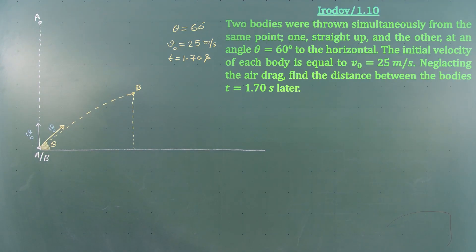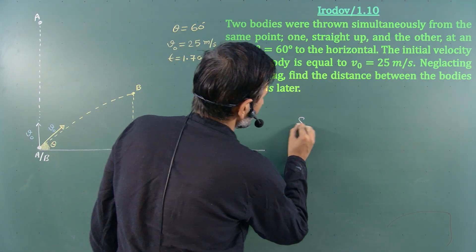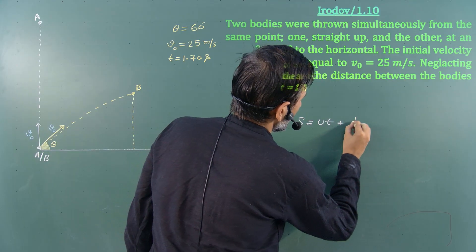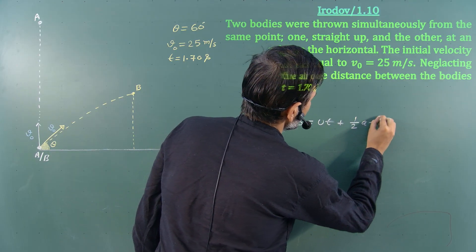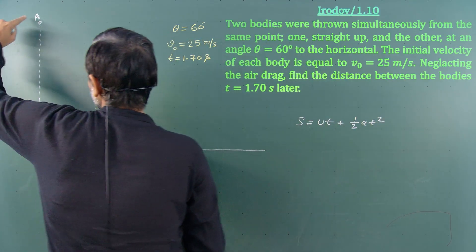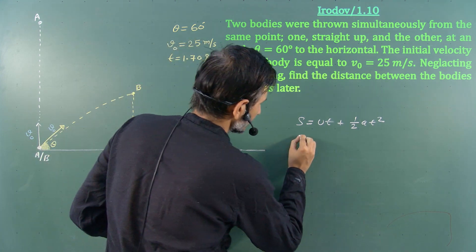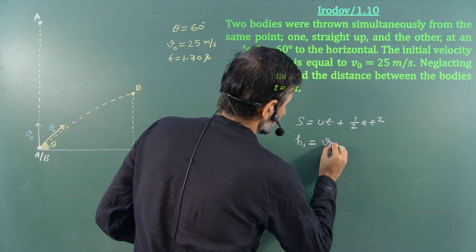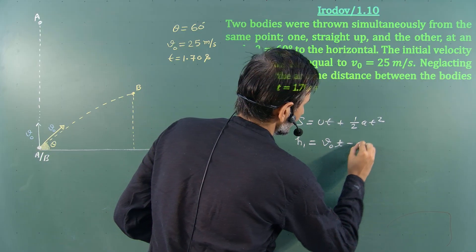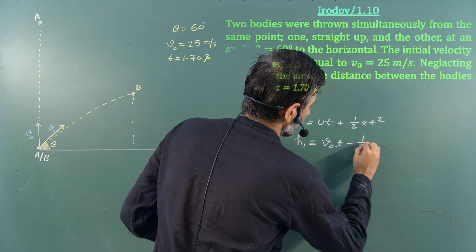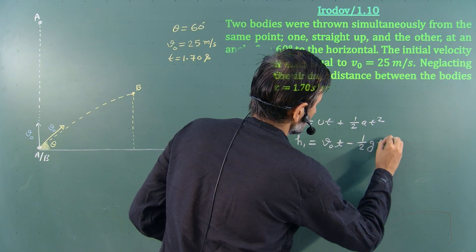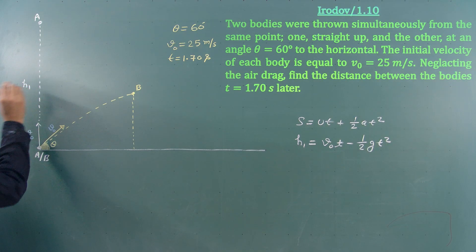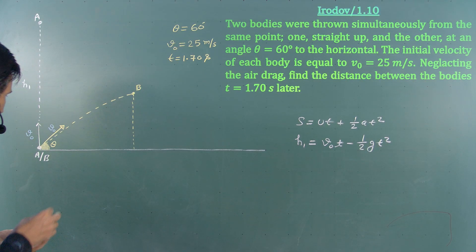For particle A, this is purely vertical motion. Using the formula s = ut + ½at², in the y-direction, the displacement h1 equals v₀·t minus ½g·t². So this complete vertical length is h1.